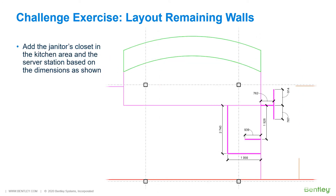As shown here, you will add single line wall representations for the janitor's closet in the kitchen area and the server station based on the dimensional data. You may pause and rewind as needed to get the necessary information to complete the challenge exercise.